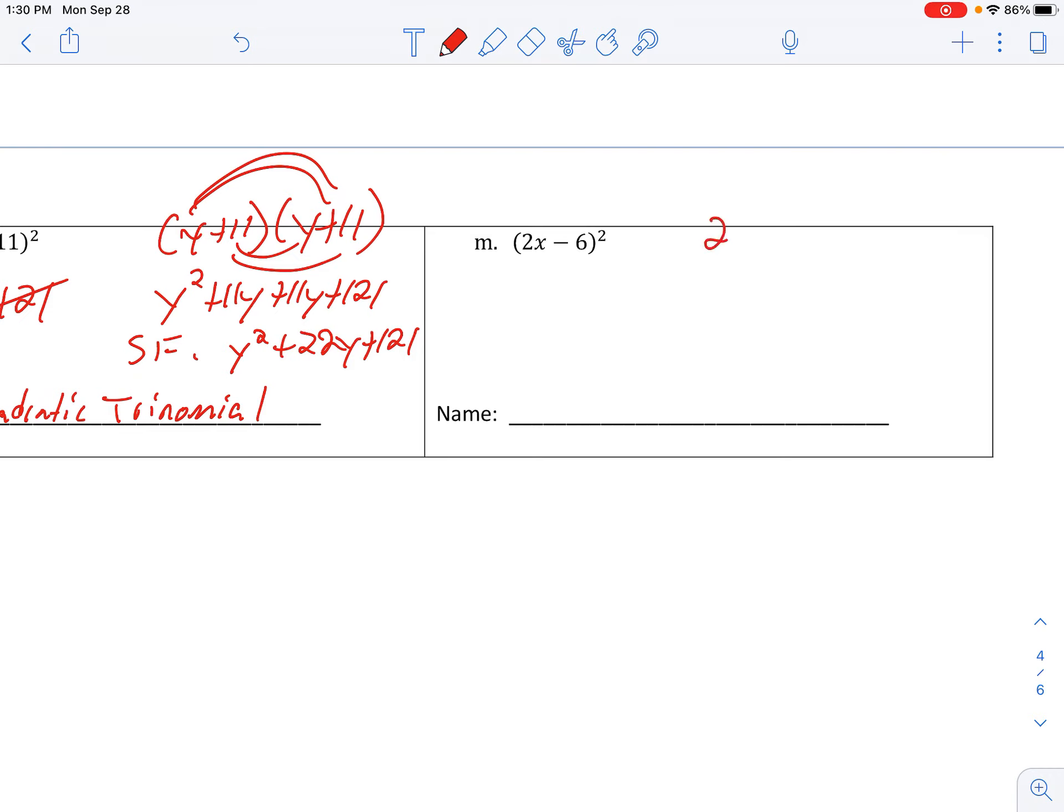So on letter M, first thing, again, I want you to do is expand it out. And then just keep distributing, just keep distributing, just keep distributing. All right. And then in standard form, this is a quadratic trinomial.